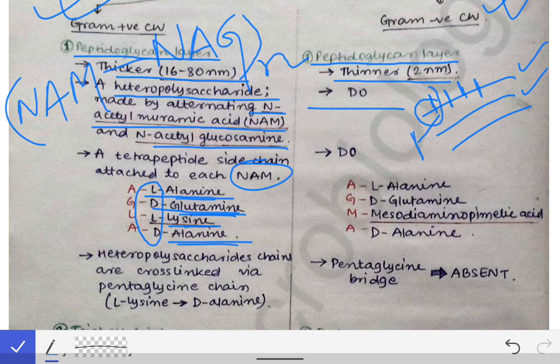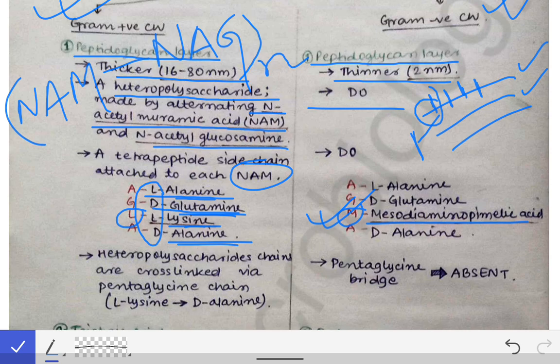This tetrapeptide is also present in gram-negative bacteria, attached to the NAM portion of the heteropolysaccharide. However, the difference is that at the third position, instead of L-Lysine, there is mesodiaminopimelic acid. This is sometimes asked as an MCQ — which amino acid is at the third position of the tetrapeptide side chain attached to the NAM portion in gram-negative bacteria. The other three amino acids remain the same as in gram-positive bacteria; only the third is changed to mesodiaminopimelic acid.